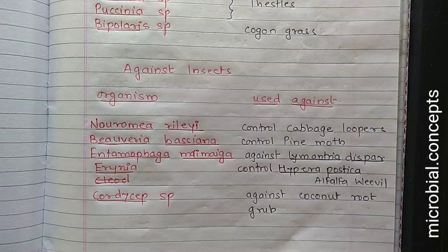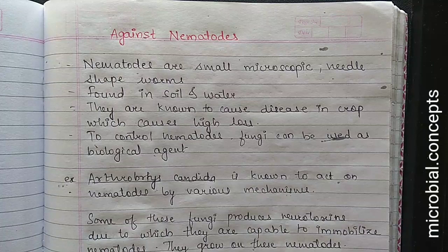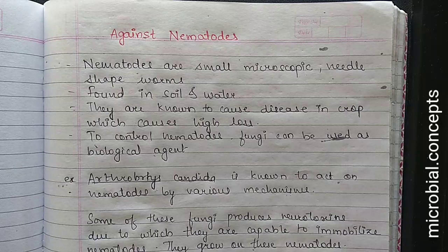Cordyceps species of fungi actually attack the larval stage of the coconut root grub. They grow throughout the body of the larva and eventually the larva dies. This is how these fungi are used as a biocontrol agent. Remember to write four or five examples for each category for exam questions.